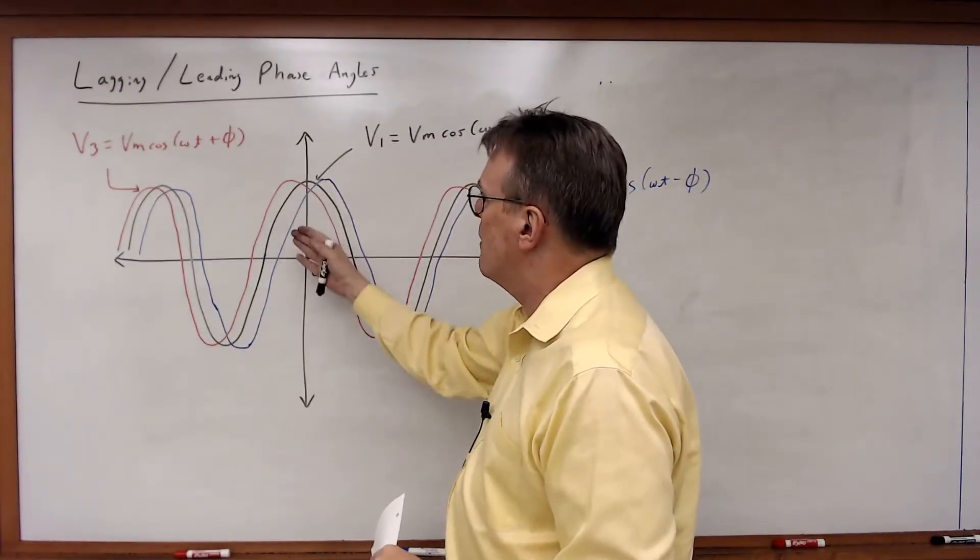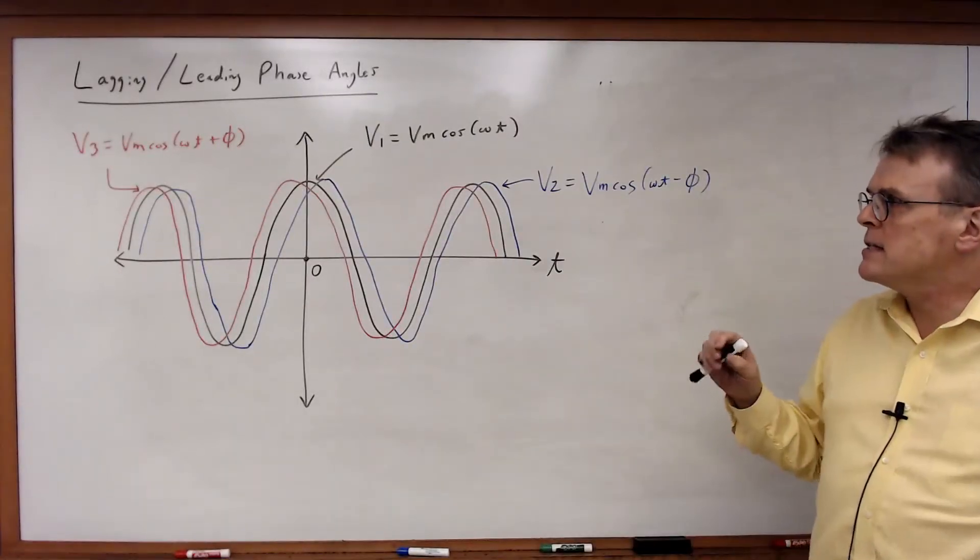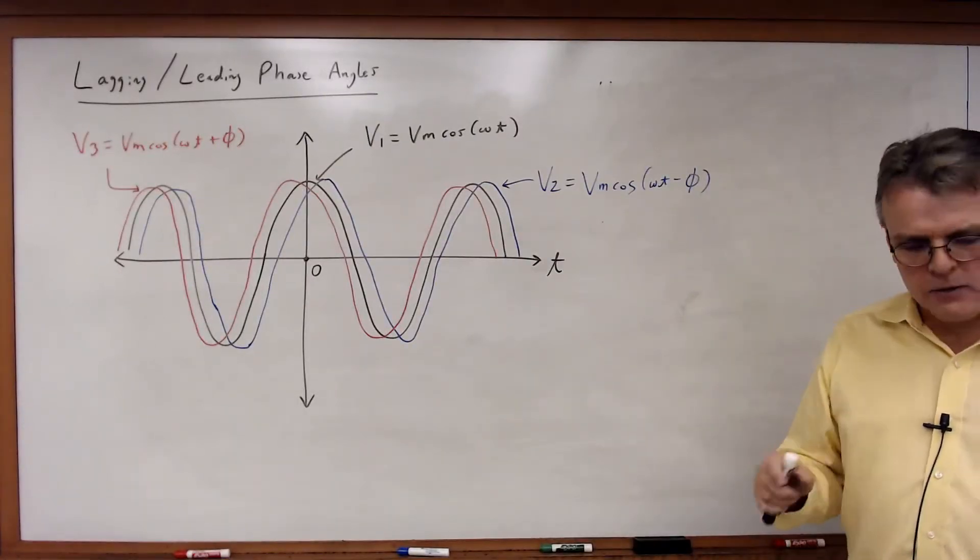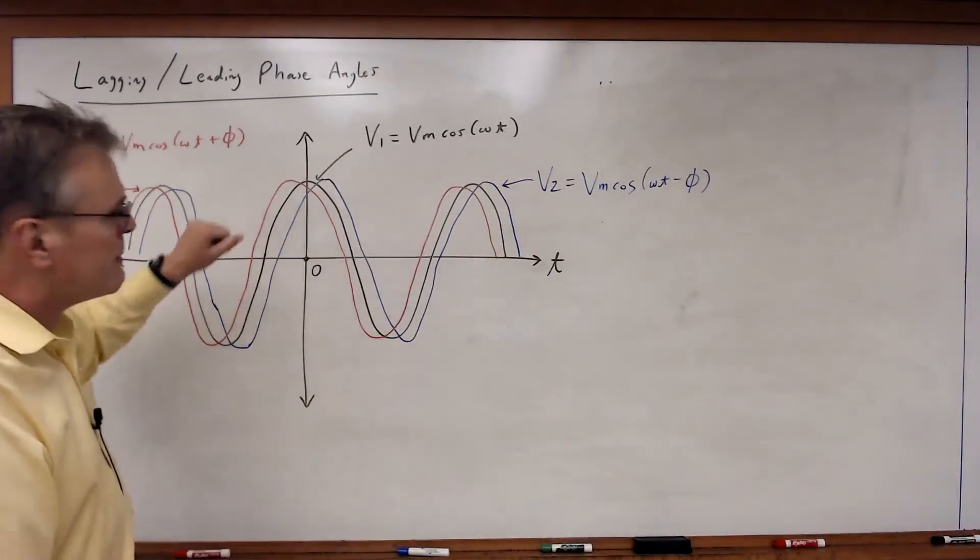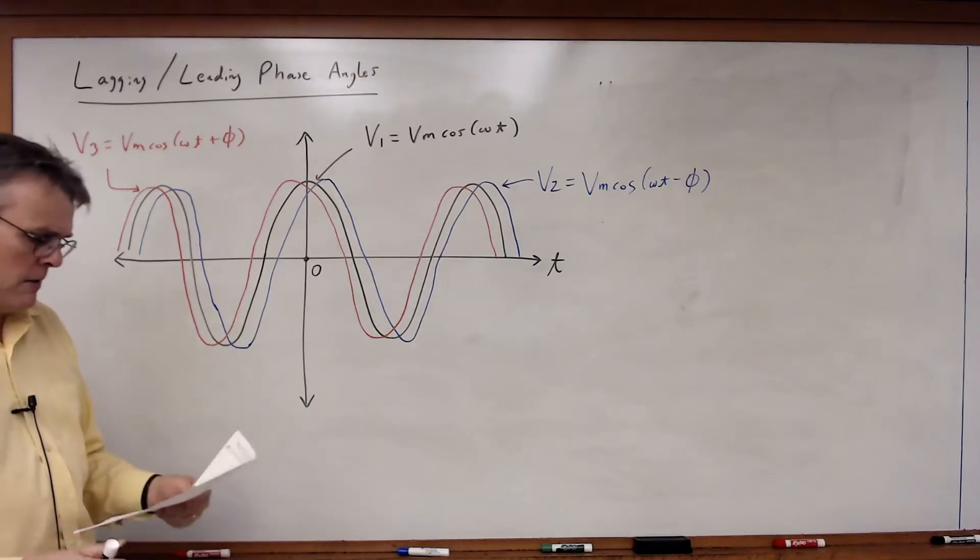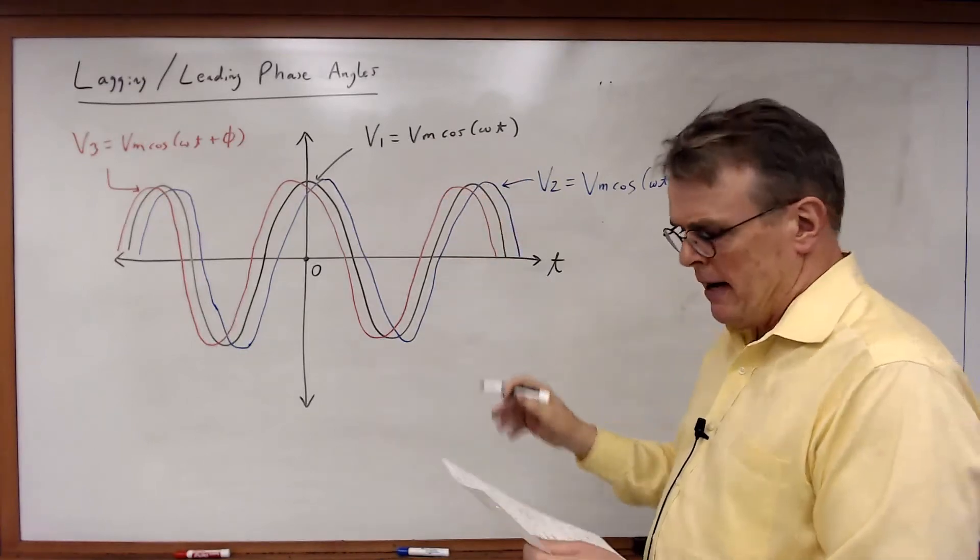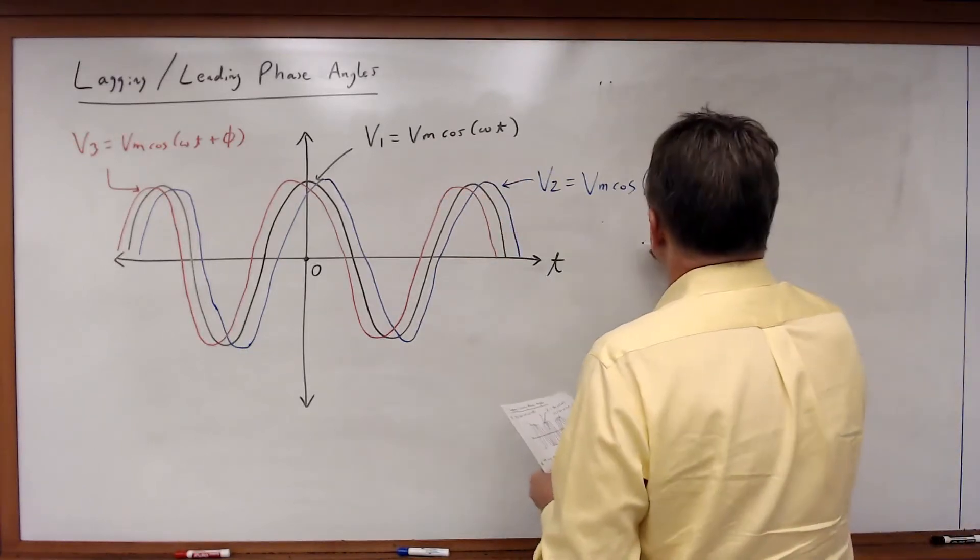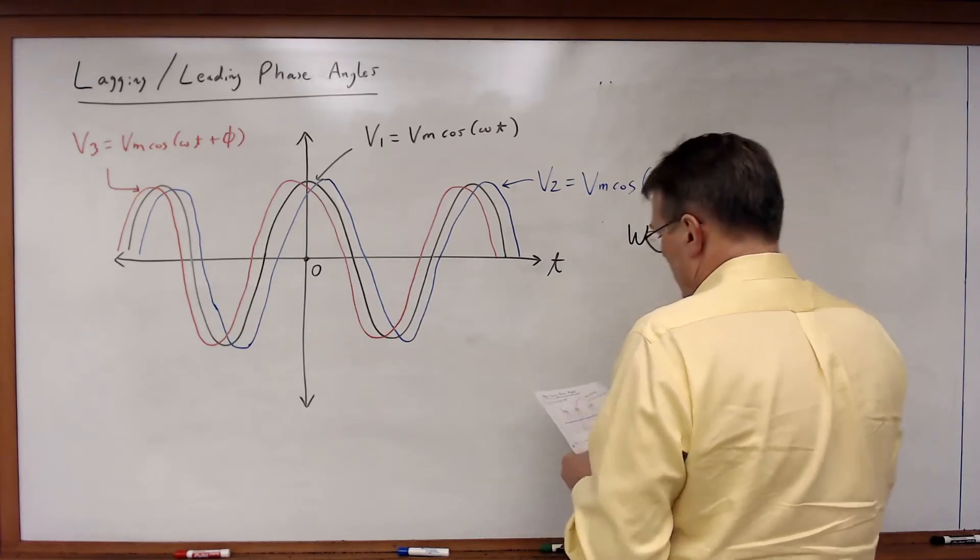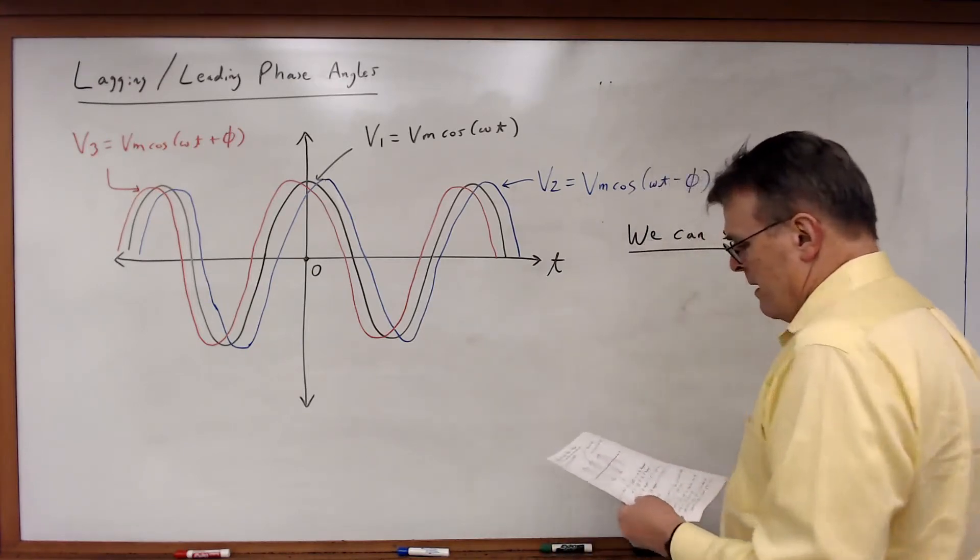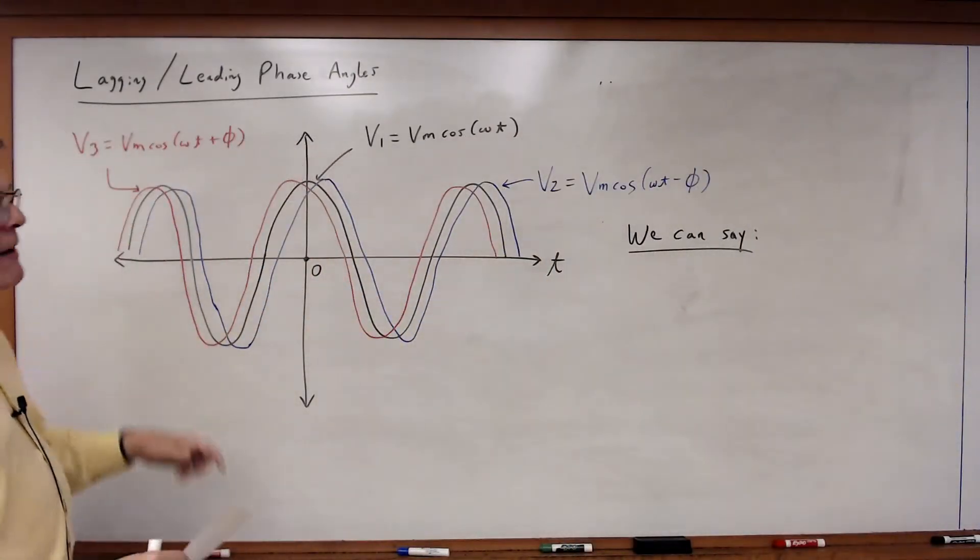Looking at this, let's consider how this thing is going to behave and how we would describe the differences between these three voltages. Leading and lagging, let's see how we apply this. We can say that v3 leads v1 by φ degrees.